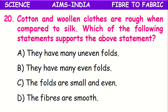Cotton and woolen cloths are rough when compared to silk, because silk has a very smooth texture. Which of the following statements supports this? The reason cotton and woolen cloths are a little rough when compared to silk is that they have many uneven folds, making them somewhat rough compared to silk.